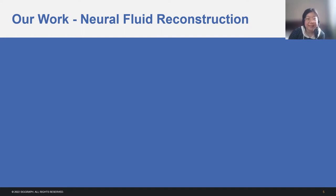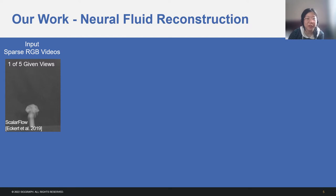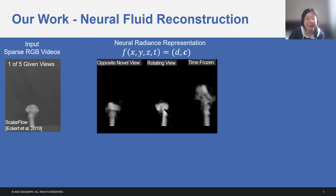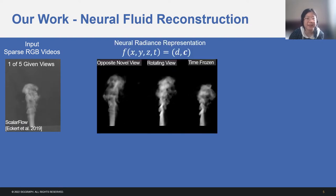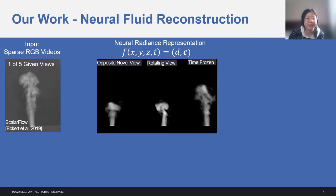In the first place, let's take a look at the input and output of our method. The only input of our method is a sparse set of synchronized RGB videos with known camera poses, like this example video provided by scalar flow dataset. Based on the input, we use a fully connected neural network to learn the radiance distribution in space and time. More specifically, the radiance network maps a 4D coordinate x, y, z, t to its corresponding radiance, which is comprised of density and color.